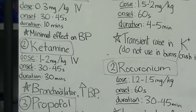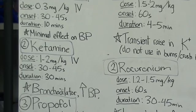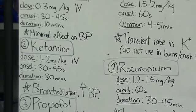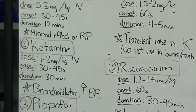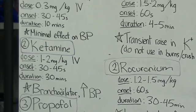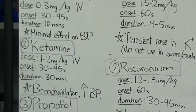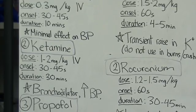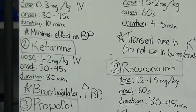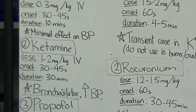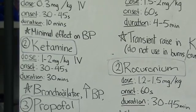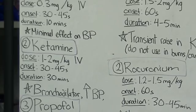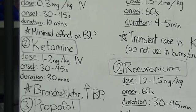The next sedative we will discuss is Ketamine. Ketamine is a dissociative agent and a PCP derivative that provides both analgesic and sedative properties. Ketamine is dosed at 1 to 2 milligrams per kilogram IV, has an onset of 30 to 45 seconds, and a duration of 30 minutes.